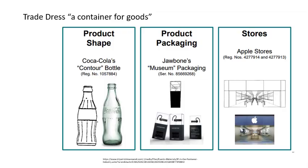We're going to talk about trade dress — just think of "dress" as the clothes for something. Trade dress is a facet of trademark protection that protects the packaging of a trademark good. Here are three examples of trade dress: the shape of the Coke bottle, which still has protection; product packaging that presents something like headphones on a museum pedestal; and the Apple Store.